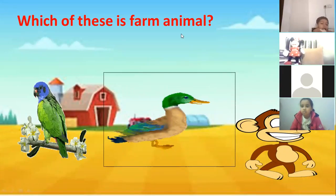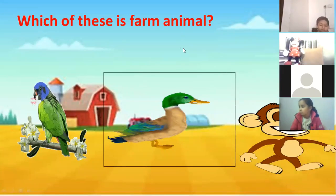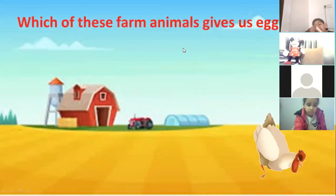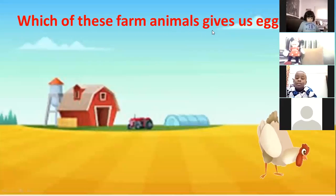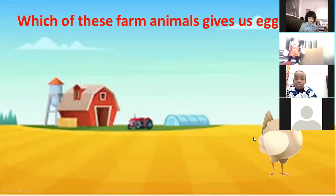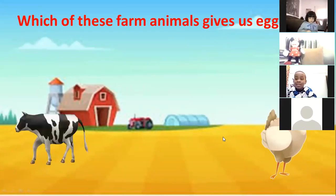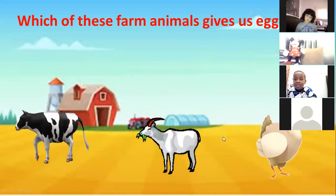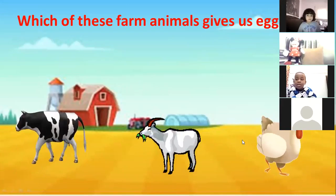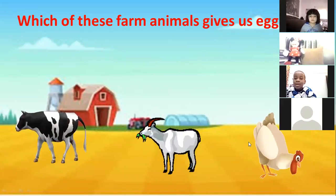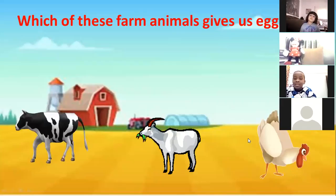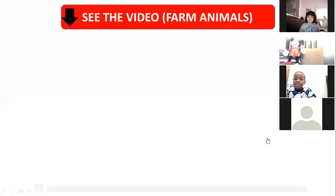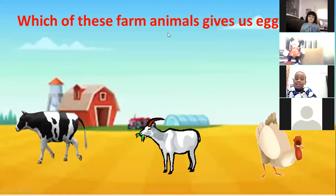Unmute yourself, Ameen. Yes, teacher. Now you will tell me which of these farm animals gives us eggs. I will show you: hen, cow, or goat — which of them gives us eggs? Hen! Excellent, Ameen! Hen is the right animal that gives us eggs. Thank you so much, Ameen.